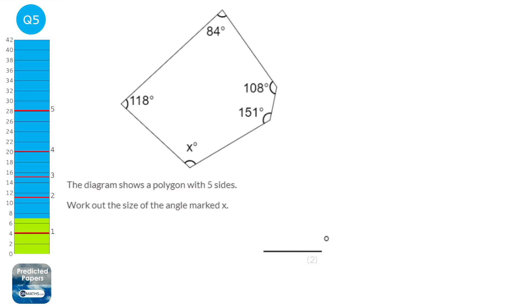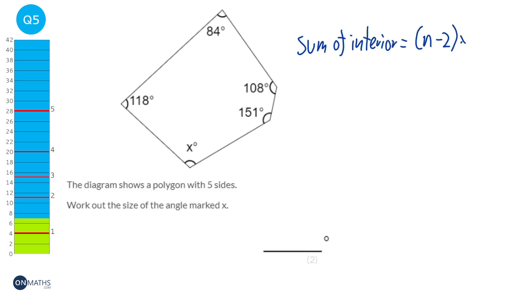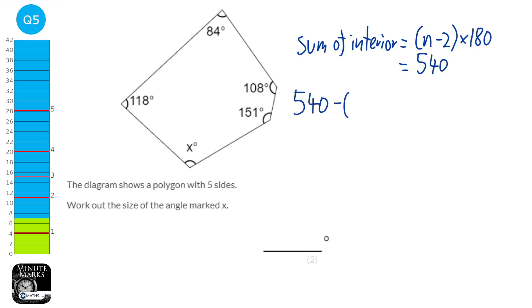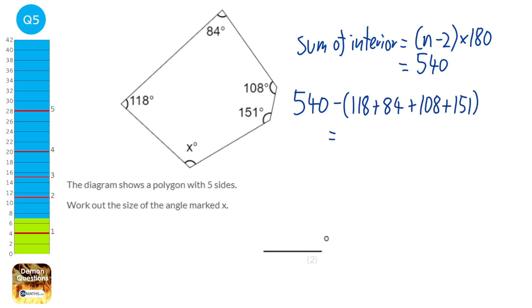First, work out what the interior angles add up to. The sum of interior angles equals (n − 2) × 180. With 5 sides: (5 − 2) × 180 = 3 × 180 = 540 degrees. Then take away all the known angles — 118, 84, 108, and 151 — from 540, and you get the answer of 79 degrees.